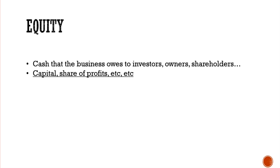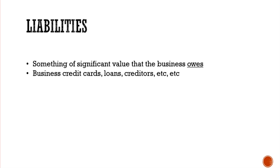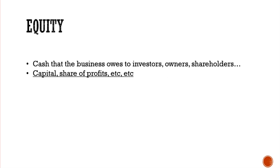Equity is cash that the business owes to investors, owners, and shareholders. It is similar to a liability in that it is something owed, but the difference is that it's owed specifically to investors, business owners, or shareholders. Equity usually takes the form of capital — money that owners have invested into the business and is owed back to them — or a share of profits that the business pays out to shareholders.